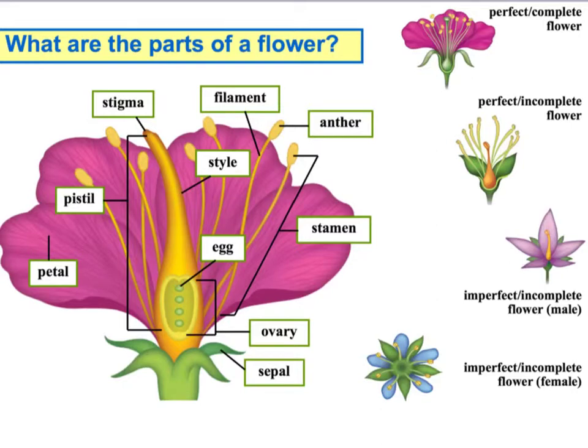So that was the complete flower, having all four parts: petals, sepals, stamen, and pistils. An incomplete flower is missing one or more of those parts. A perfect flower has both stamens and pistils. Typical perfect flowers include lilies, tulips, and fruit blossoms. A flower can be incomplete and perfect.